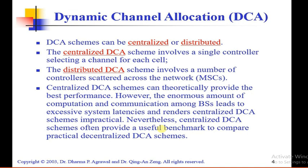DCS schemes can be centralized or distributed. The centralized DCS scheme involves a single controller selecting a channel for each cell. The distributed DCS scheme involves a number of controllers scattered across the network. Centralized DCS schemes can theoretically provide the best performance. However, the enormous amount of computation and communication among base station controllers leads to excessive system latency and renders the centralized DCS scheme impractical.